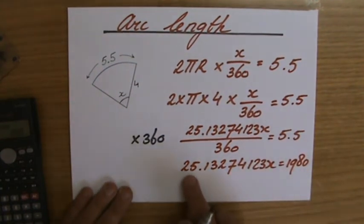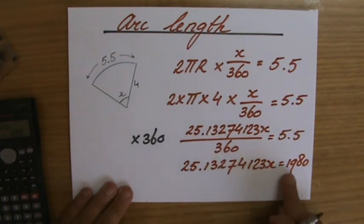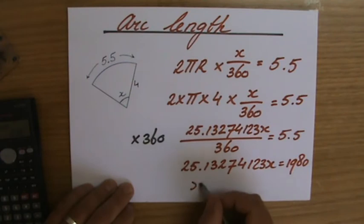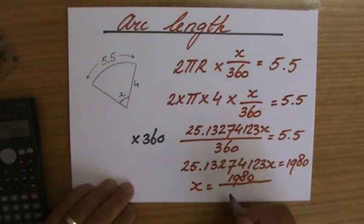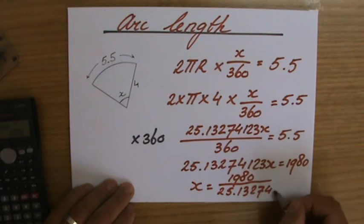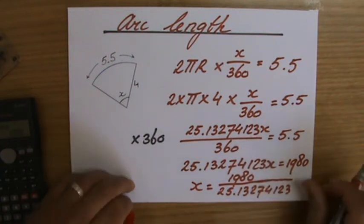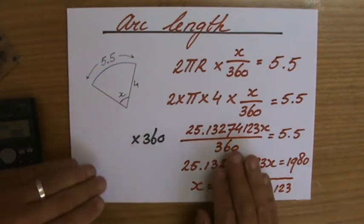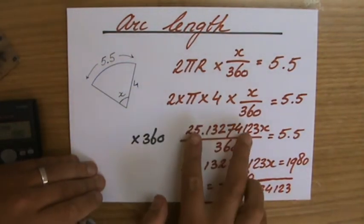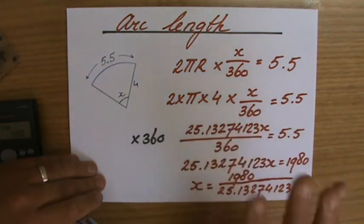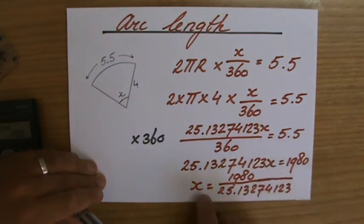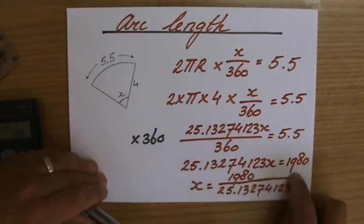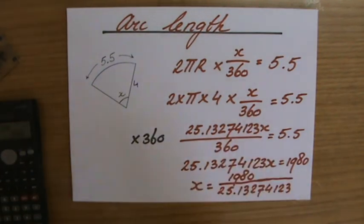So 8πx equals 1,980, yeah? So x equals 1,980 divided by 25.13274123, yeah? And hopefully you agree with me, again, that perhaps it would have been easier to have said 8π. Just leave it like that. 8π is a number. It's 25 point and a lot of other numbers, yeah? 8πx equals 1,980. So x equals 1,980 divided by 8π, and then you would put it on your calculator.